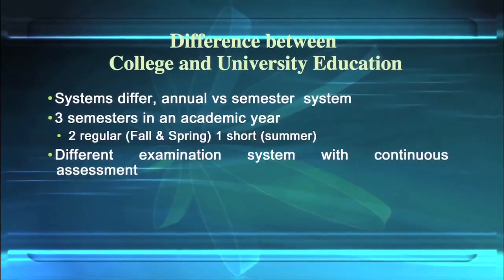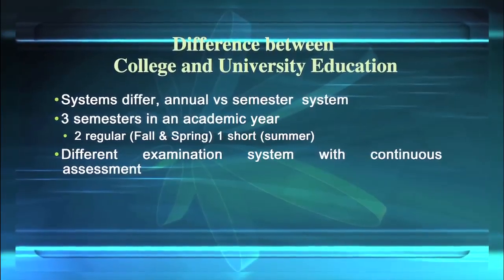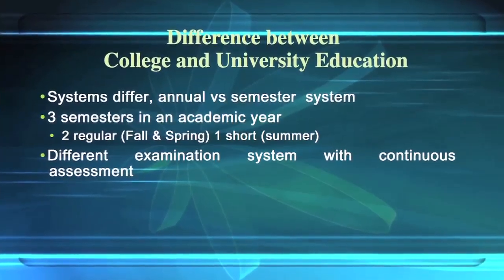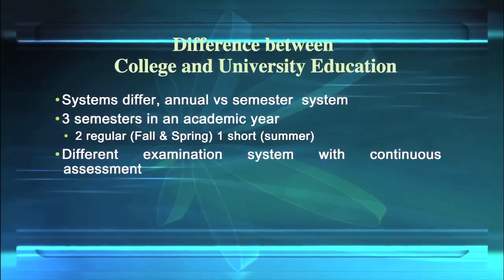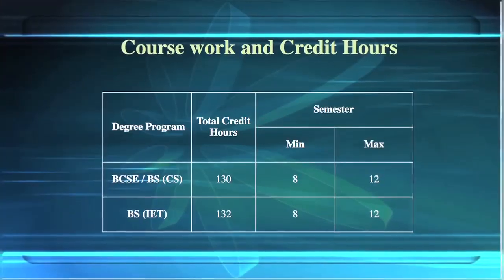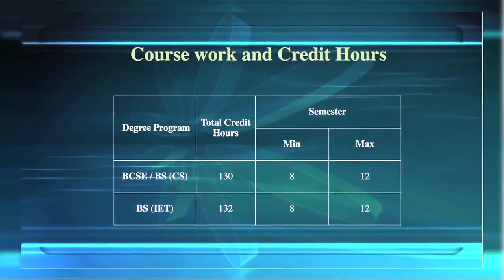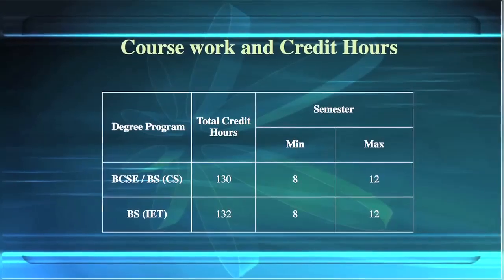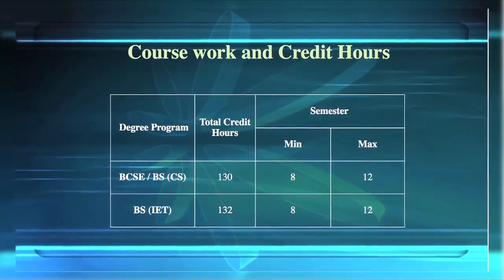As most of you come from an annual system, here at Foundation University there is a semester system. There are two regular semesters and one short semester. Regular semesters are Fall and Spring, whereas the short semester is a Summer semester. To complete a Software Engineering or Computer Science degree, you need to pass 130 credit hours, whereas for Information Engineering Technology you need to pass 132 credit hours, within a minimum of 8 semesters and a maximum of 12 semesters.